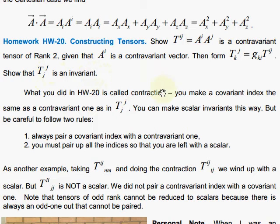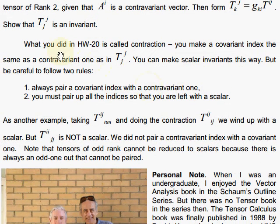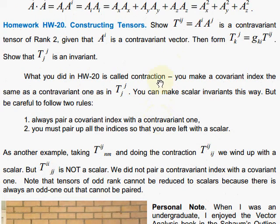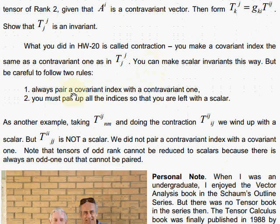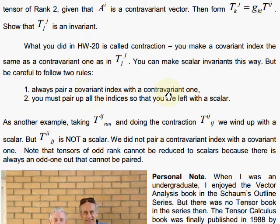This very important assignment gives you additional knowledge of raising and lowering, and contraction. This is called contraction when you do this. You make an index that's contravariant and covariant the same, and you contract. Always pair a covariant with a contravariant one for contraction, and you must pair up all the indices so that you are left with a scalar.